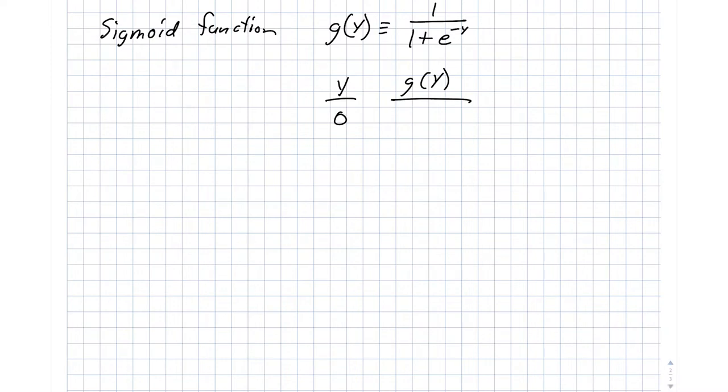For y equals 0, then g equals 1 half. For y of 1, g is at 0.731 plus other digits. For 2, we're at 0.881, and as y tends toward infinity, g of y tends toward 1. Working in the opposite direction, a y of negative 1 corresponds to a g of 0.26, and it turns out it's symmetric. If y tends towards negative infinity, then g of y tends toward 0.